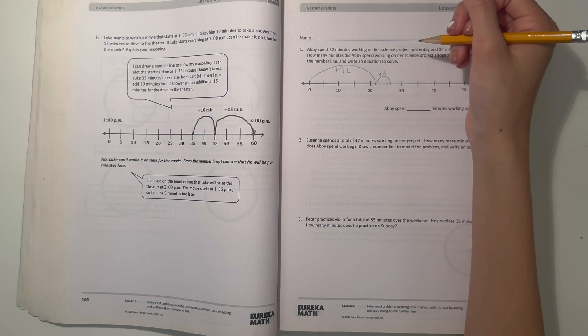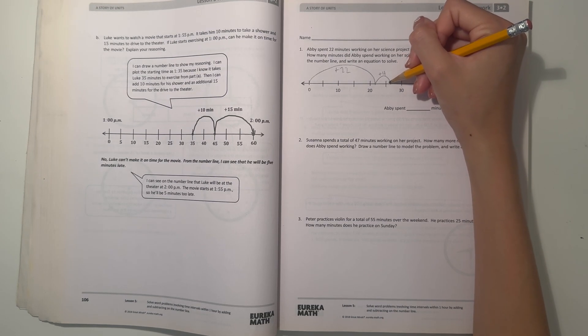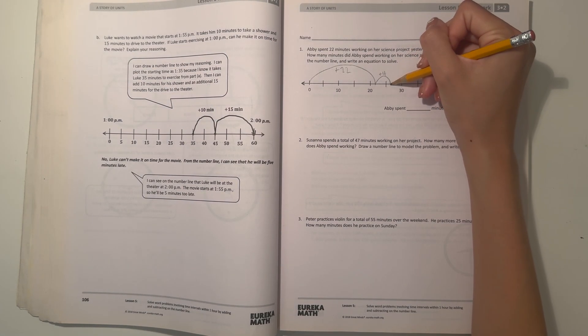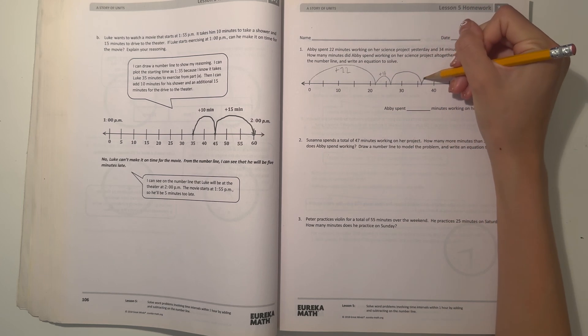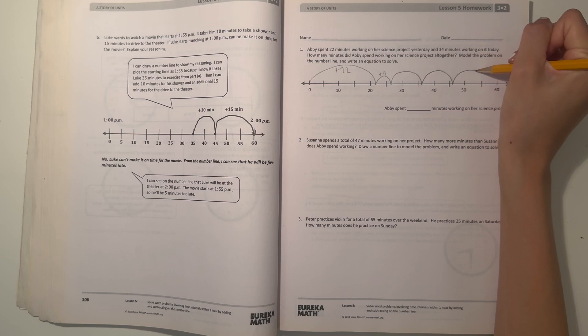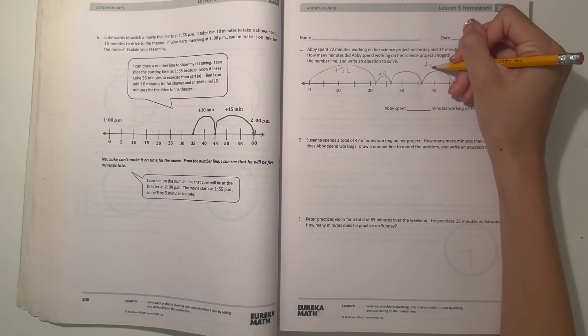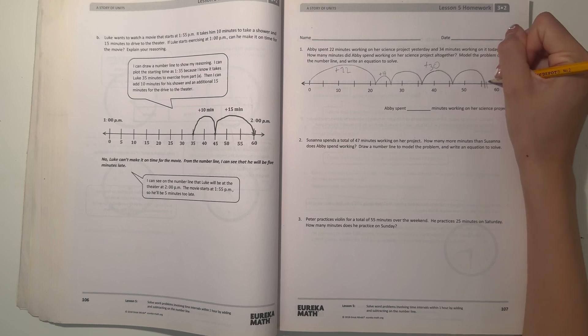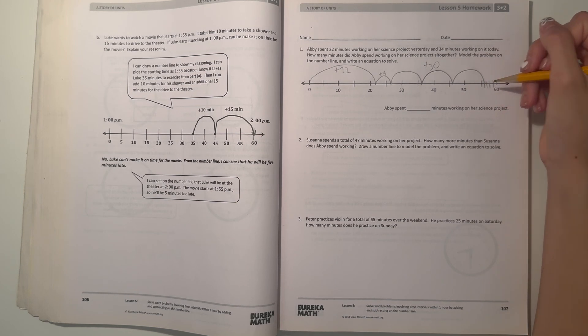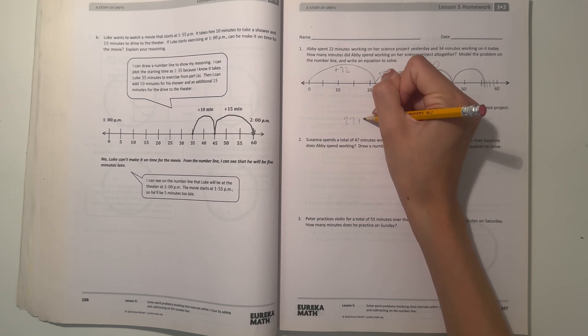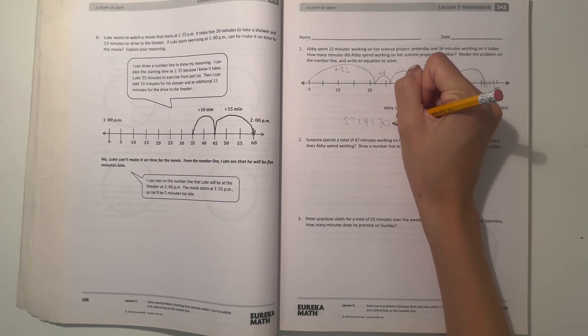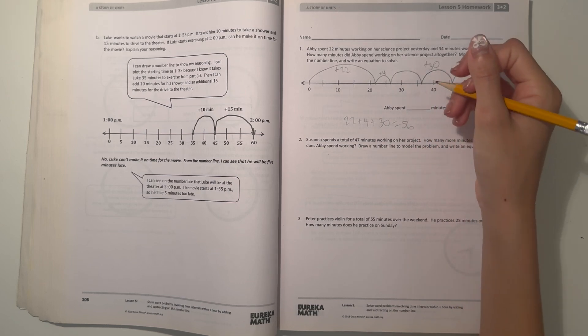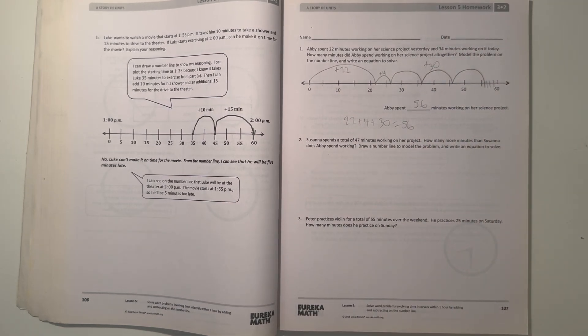So then after we add that four, we can just add 30. So now we're at 26. So then just add 30. So one, two, and three. So that's plus 10 times 10 times plus 30. So now that gives us to 56. So then 22 plus 4 plus 30 equals, 22 plus 4 is 26, and 26 plus 30 is 56. So then Abby spent 56 minutes working on her science project.